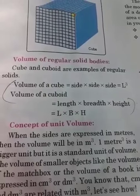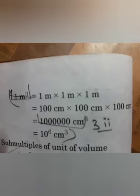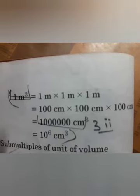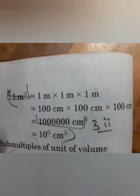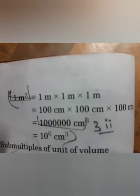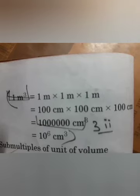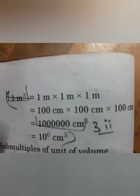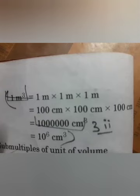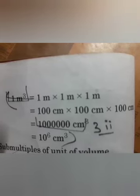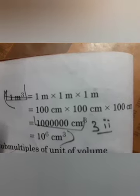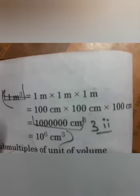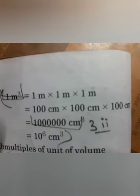Now I will teach you how to convert one meter cube into centimeter cube. One meter cube means the unit meter is written thrice. Since 1 meter equals 100 centimeters, we substitute all three meters: 100 cm × 100 cm × 100 cm. Counting the zeros, there are six, so 1 meter cube equals 10 to the power 6 centimeter cube.